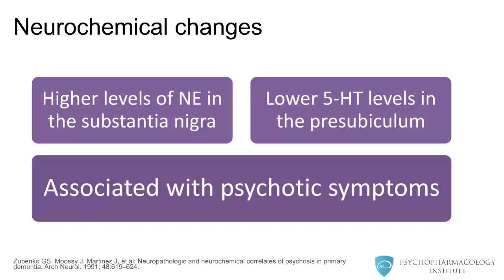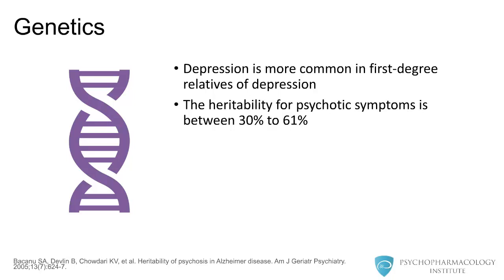Researchers have found that higher levels of norepinephrine in the substantia nigra and lower levels of serotonin in the presubiculum are associated with psychotic symptoms. There is also genetic correlation with behavioral and psychological symptoms of dementia. Depression tends to be more common in first-degree relatives of individuals who have depression.